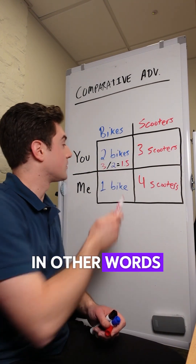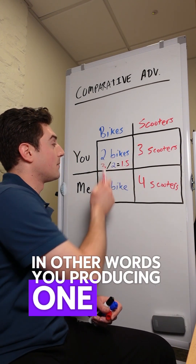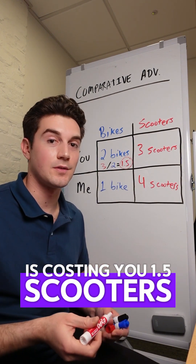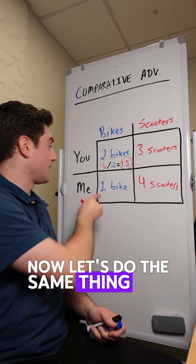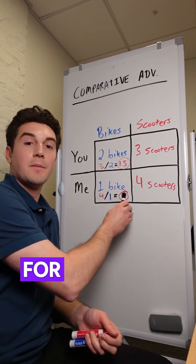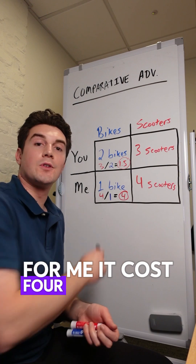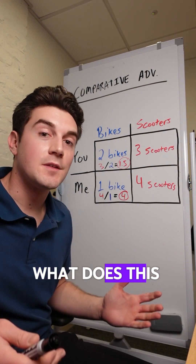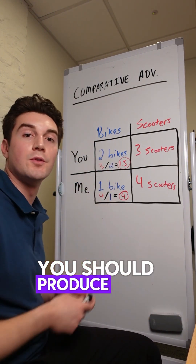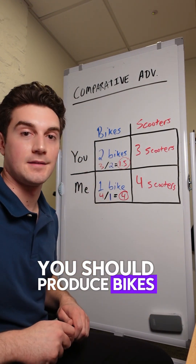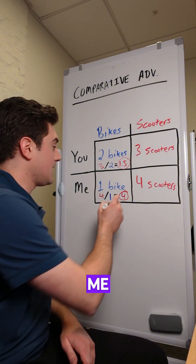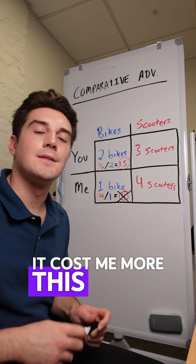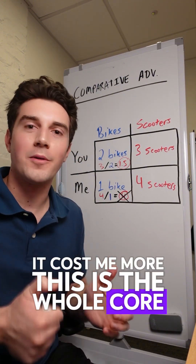You producing one bike is costing you 1.5 scooters. Now let's do the same thing for me — it costs four scooters to produce one bike. What does this mean? Well, you should produce bikes because for me, it costs me more. This is the whole concept.